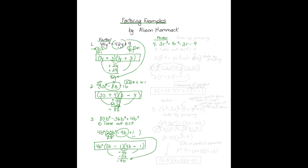My next example has four terms. When you have four terms, you're going to factor by grouping. But before we do that, we need to see if there's a greatest common factor — a number that divides into all of these numbers. Yes, there is. So first step, I want to take out my greatest common factor. The greatest common factor in this problem is three. So we'll take the three out, dividing it out of everything. And I'm left with r cubed plus three r squared minus r minus three.